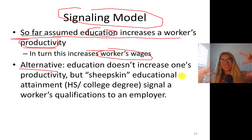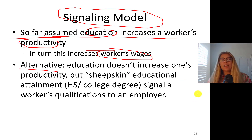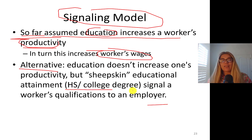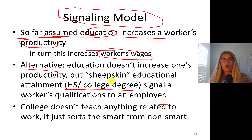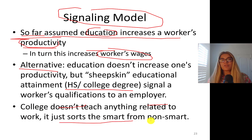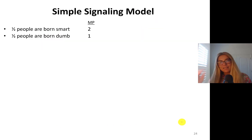Sheepskin refers to the college diploma. Back in the days, they would print any educational diplomas on a sheepskin. So college education is a sheepskin effect — getting that high school or college degree signals that a worker is actually smart. Those qualifications signal that this is a smart person. This theory says that college doesn't teach anything related to work; it just sorts or separates smart from non-smart people. So let's take a look at a simple signaling model in this part.